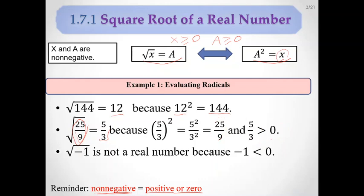We cannot put any negative number inside a square root, because the result would not be a real number — it would be undefined. No negative number is allowed inside the square root.